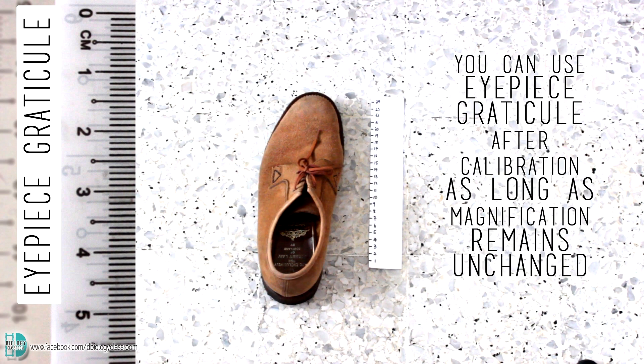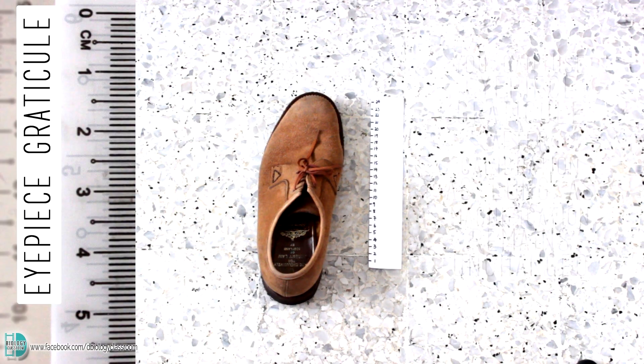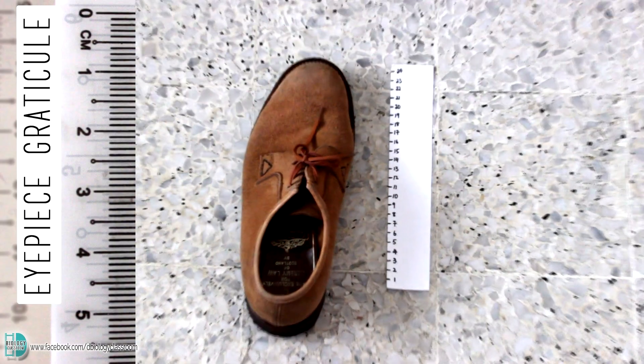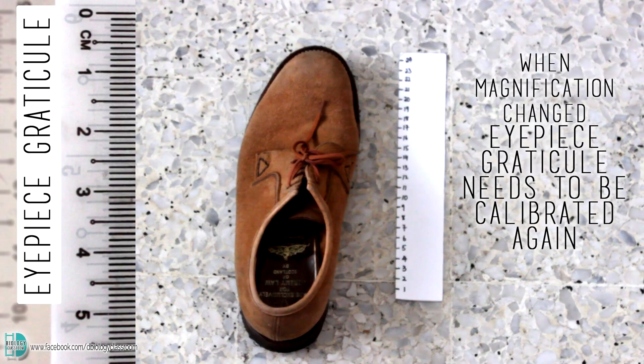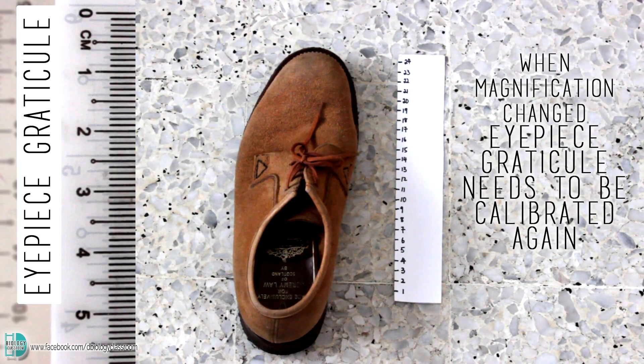After the calibration, no matter what I place on the stage, as long as I don't zoom in and out, I can use the ruler at the lens to measure them. However, if I zoom in, I need to calibrate the ruler again, as its reading is now changed. So when you are using the microscope, you have to calibrate the eyepiece graticule every time you switch from one objective lens to another.